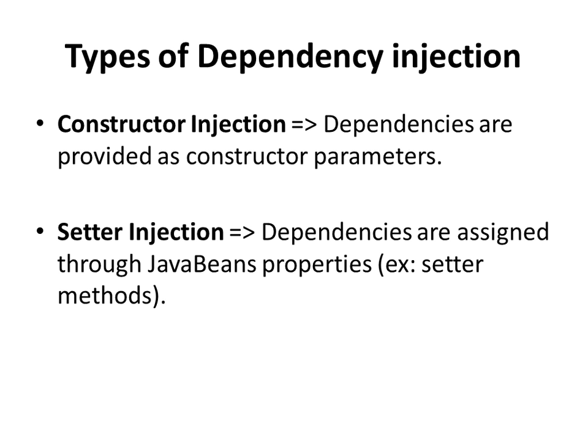In Spring there are two kinds of dependency injection: one is by using the constructors of objects and the other is by using the setters of objects, so both the constructor and the setters have to be public. In constructor injection, the dependencies are provided as constructor parameters, and in setter injection we use the Java bean properties to set the dependencies. We will look at examples of both of these when we come to examples.